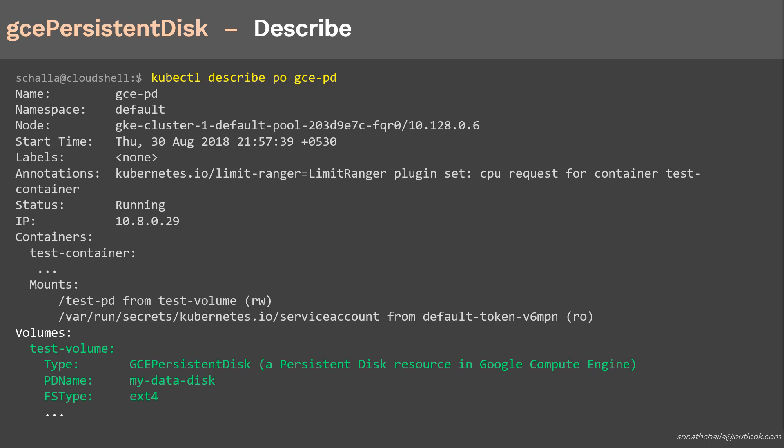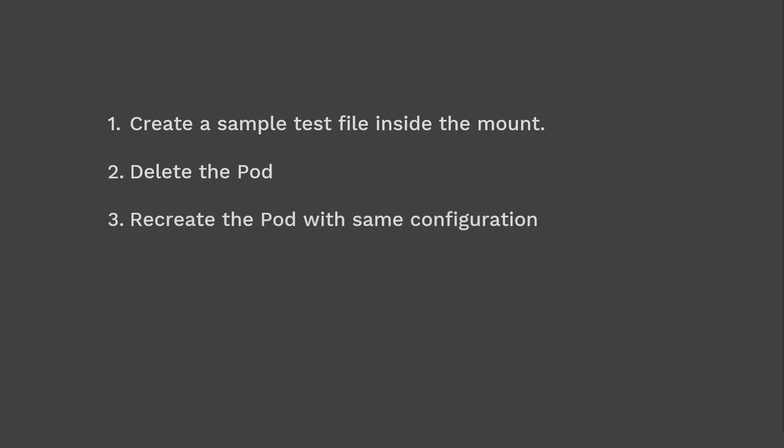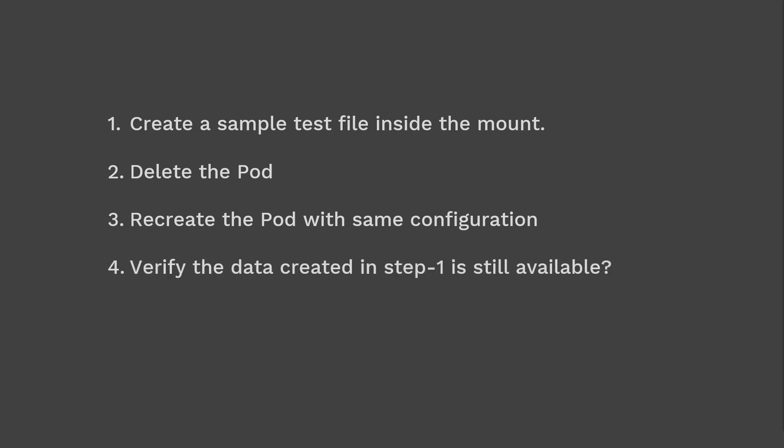Let's test the use case of GCE persistent disk. The purpose of GCE persistent disk is to have data persist on the disk irrespective of node failures, unexpected reboots, shutdowns, and any interruptions to our pod or node. To test this use case, we'll first create a sample file with some content inside the mount point. Then we'll delete the pod. Even if the pod is deleted, we expect our data to be safely saved on mydatadisk on Google Cloud. Next, we'll recreate the pod with the same configuration, and finally verify that the data created in step 1 is still available on the disk.